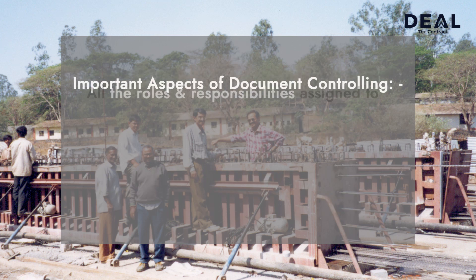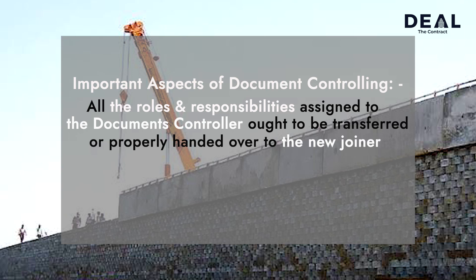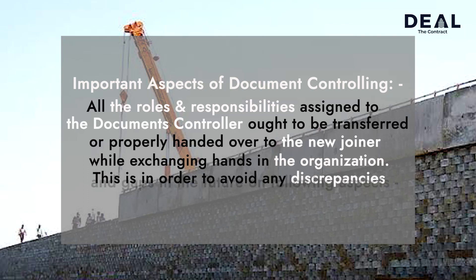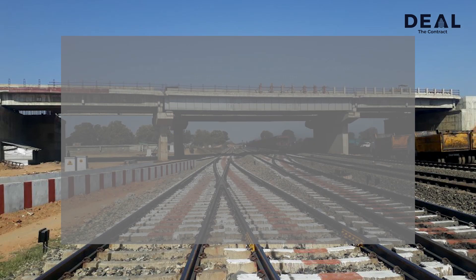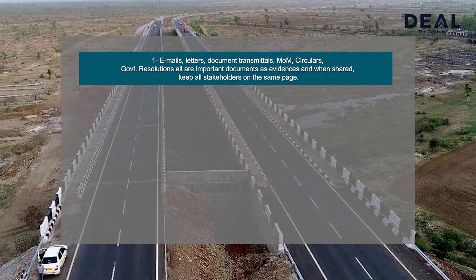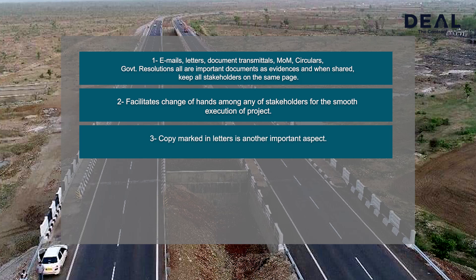Important aspects of document controlling: All the roles and responsibilities assigned to the document controller ought to be properly handed over to the new joiner while exchanging hands in the organization, in order to avoid any discrepancies and gaps. Emails, letters, document transmittals, minutes of meeting, circulars, government resolutions — all are important documents as evidences and when shared keep all stakeholders on the same page. This also facilitates change of hands among any of the stakeholders for the smooth execution of the project. Copy marked in letters is another important aspect.